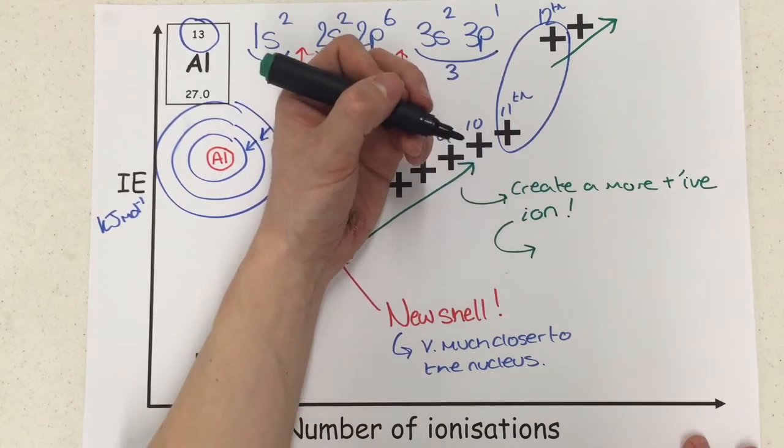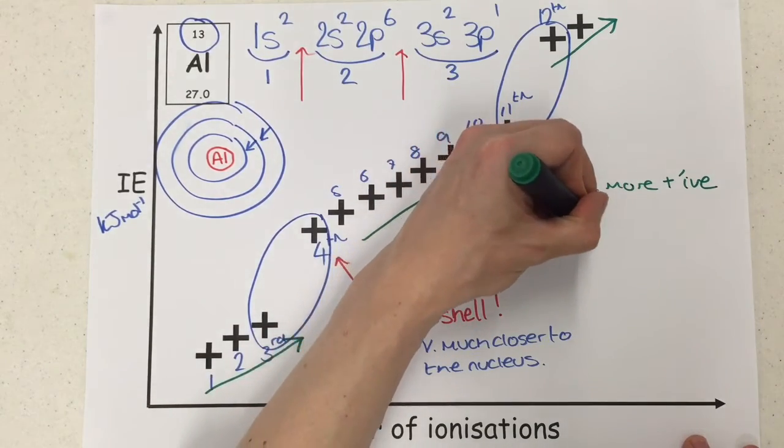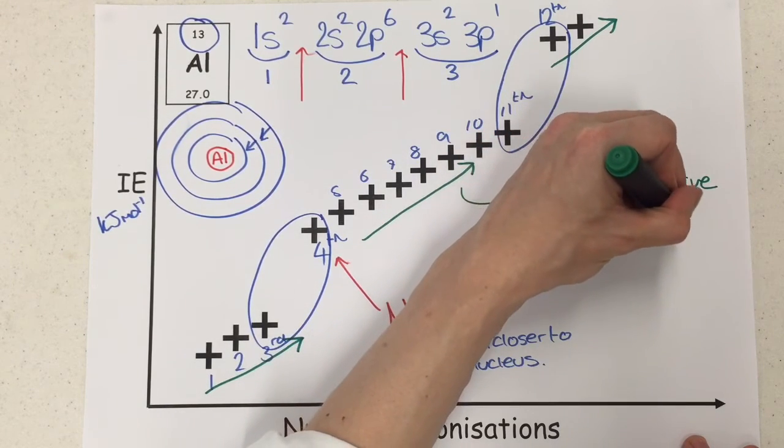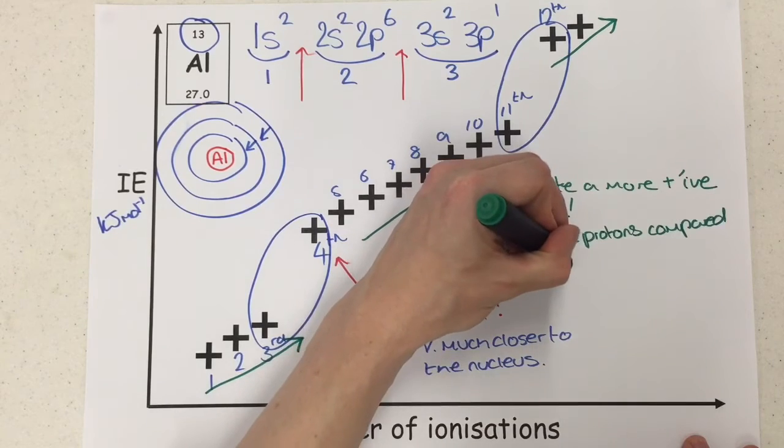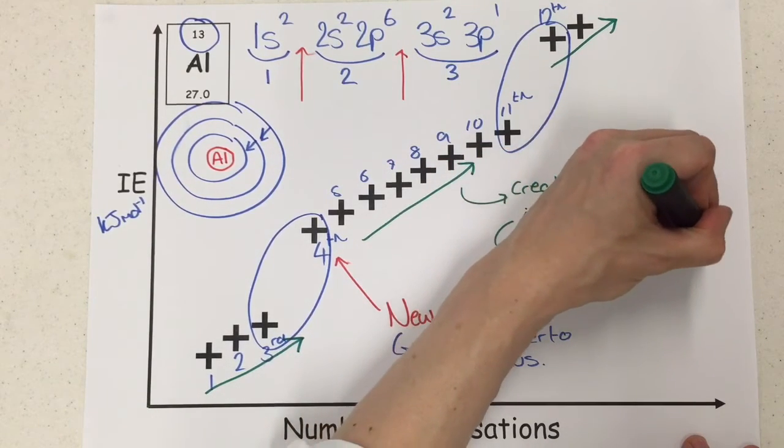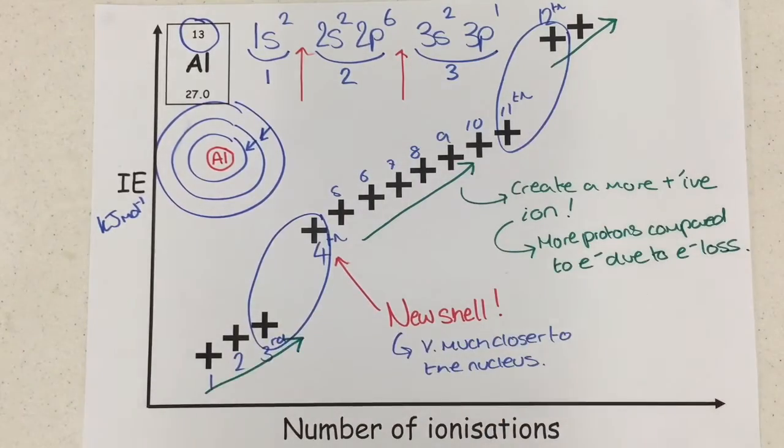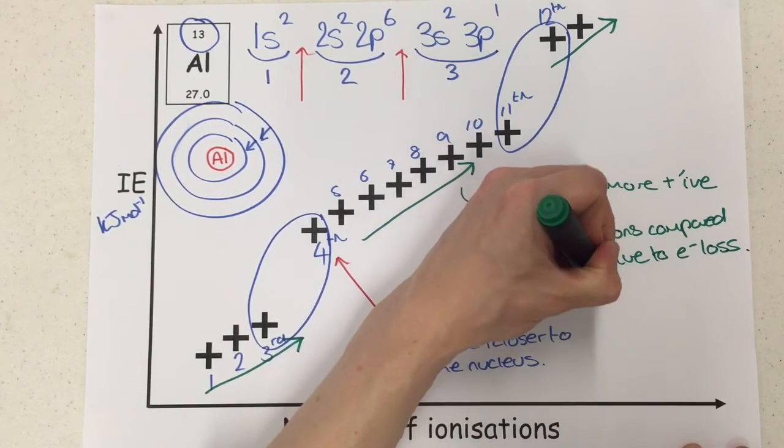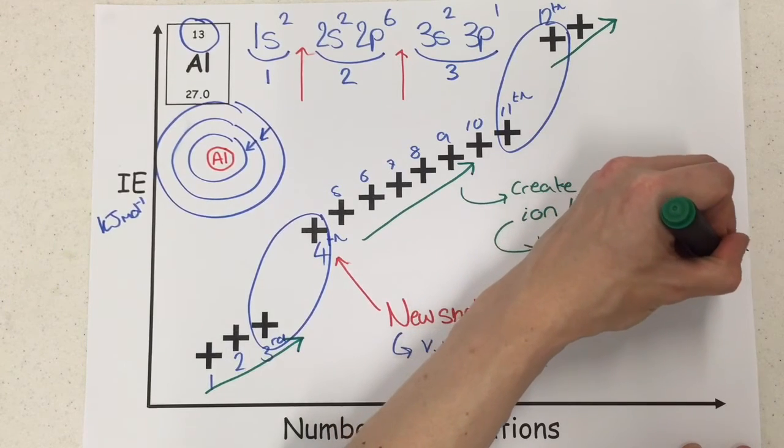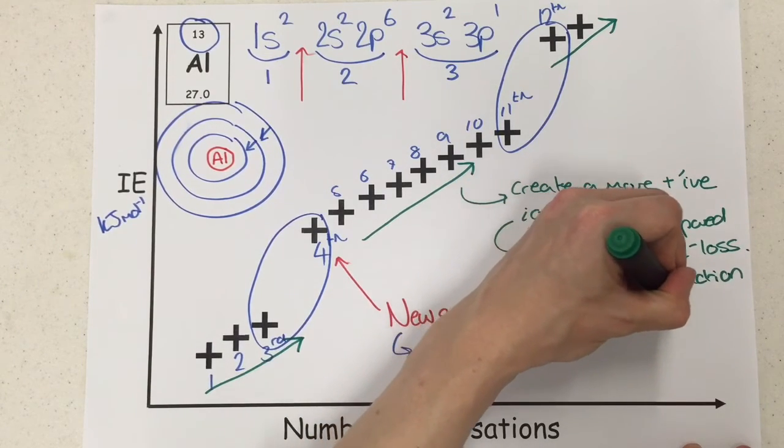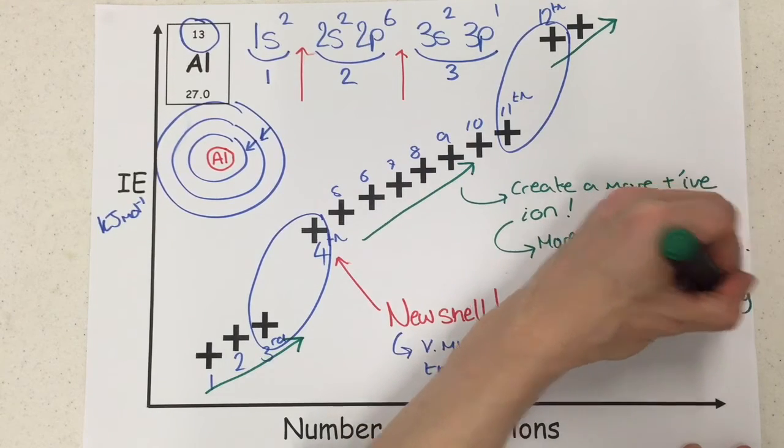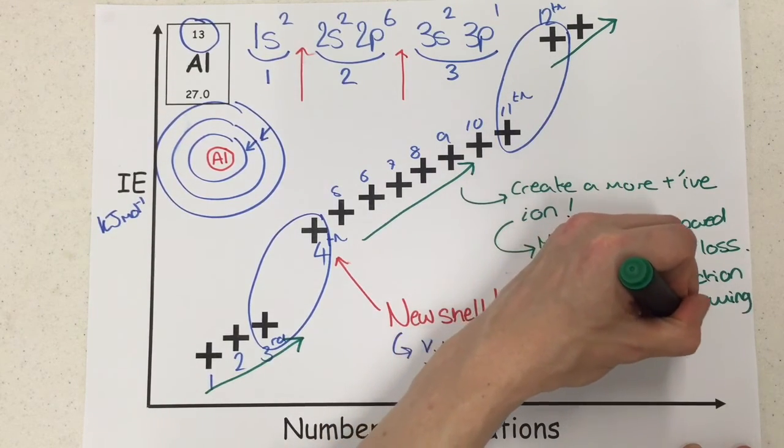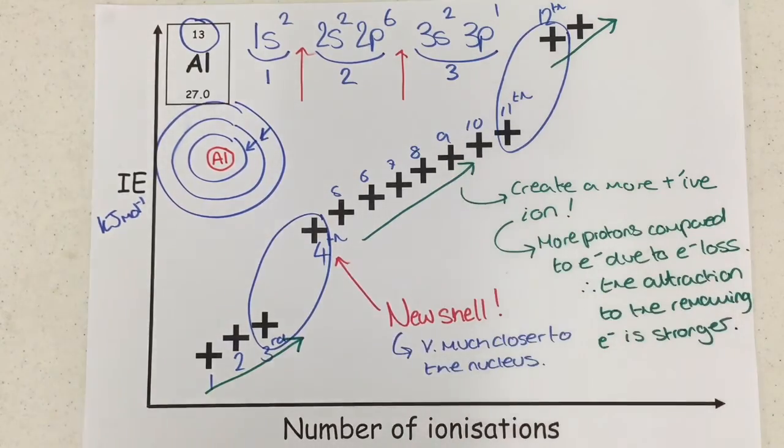Now every time you create a more positive ion, you are increasing the number of protons compared to electrons. So we have more protons compared to electrons due to electron loss. So that's not because we've added on new protons, it's because we're staying in the same element, it's because we're losing electrons. And therefore the attraction to the remaining electrons is stronger.